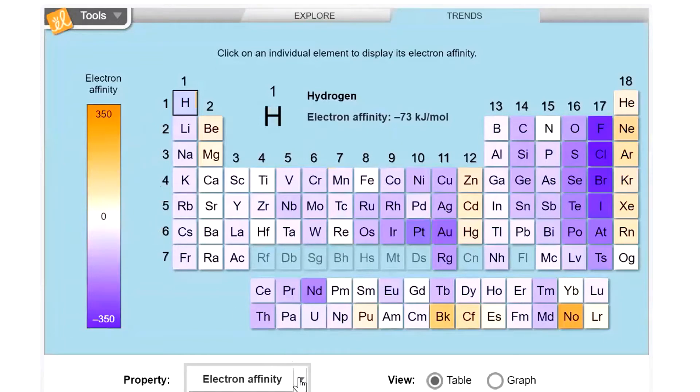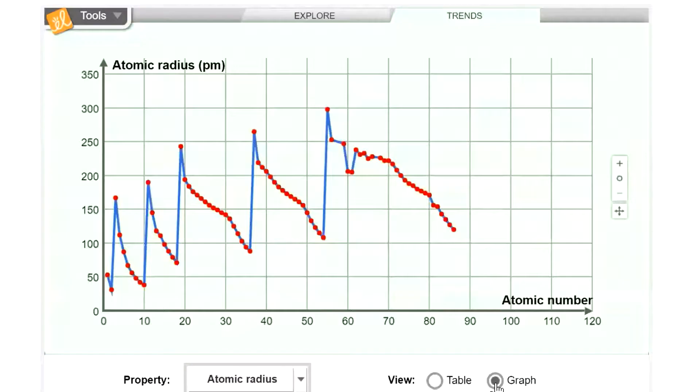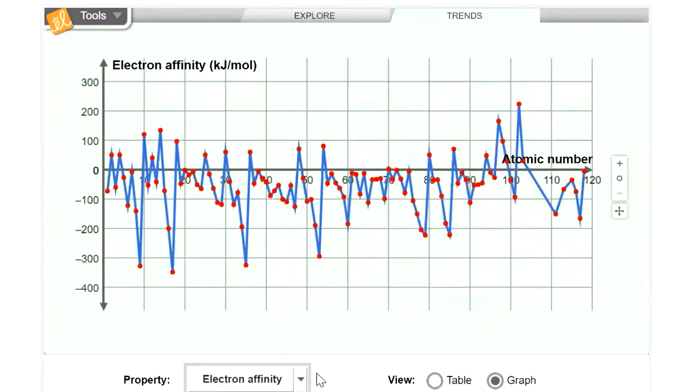Now for all three of these periodic trends, we have the ability to go and look at a graph. So this is a graph for atomic radius. This is a graph for ionization energy. This is a graph for electron affinity. So at certain points, you may be asked to refer to the graph. And you might need to label the graph. You might need to actually label some of the points. So be aware of that.